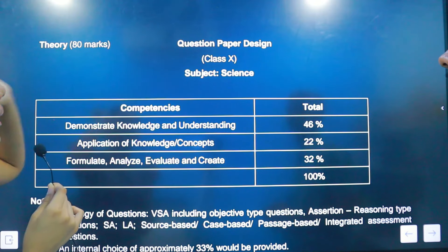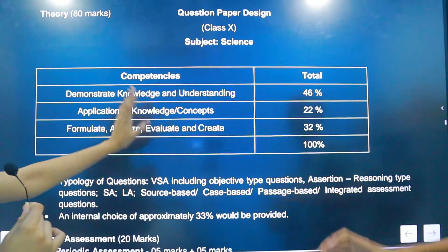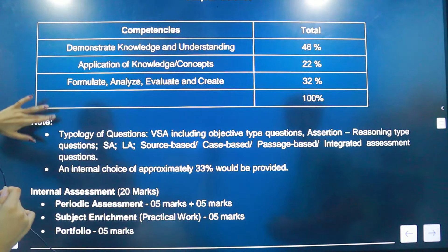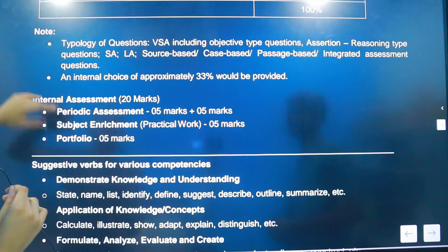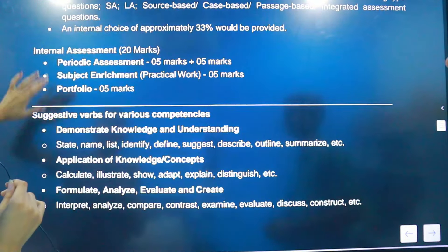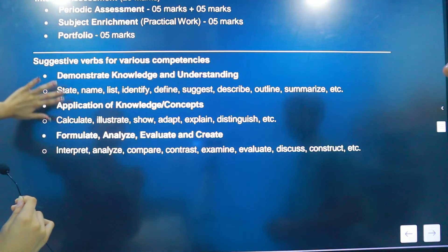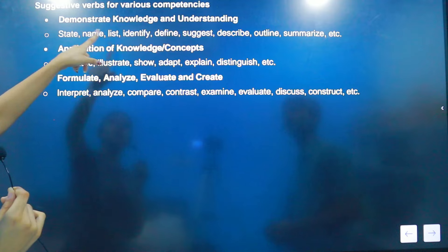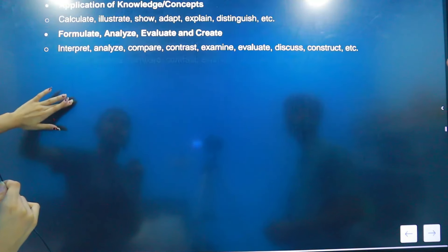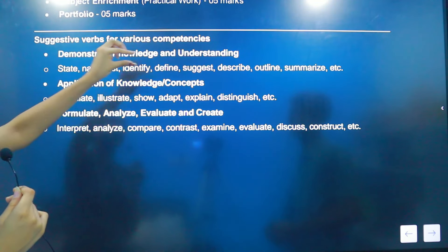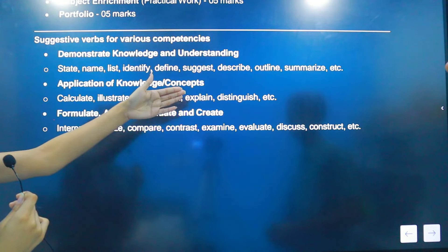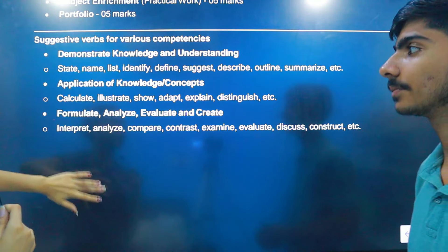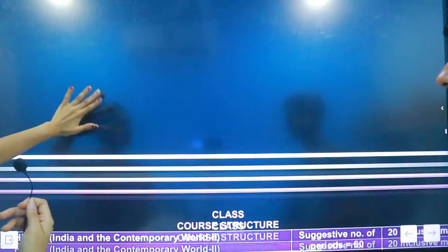Here is the breakdown for Science: Demonstrate Knowledge and Understanding has 46% weightage. There are notes for teachers and internal assessment details given. When it comes to knowledge and understanding, question types include state, name, list, and identify. There is no need to fear — all these details are clearly explained.